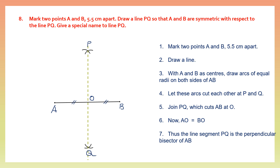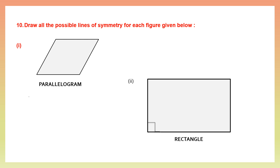I hope you have understood this construction. Now we move to question 10: draw all possible lines of symmetry for each figure given below. The first figure is a parallelogram. A parallelogram has no line of symmetry — nil, nothing. The next figure is a rectangle.